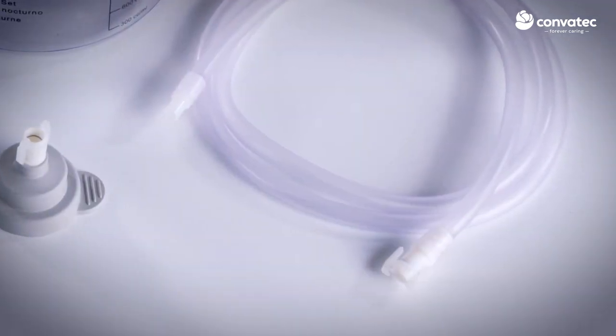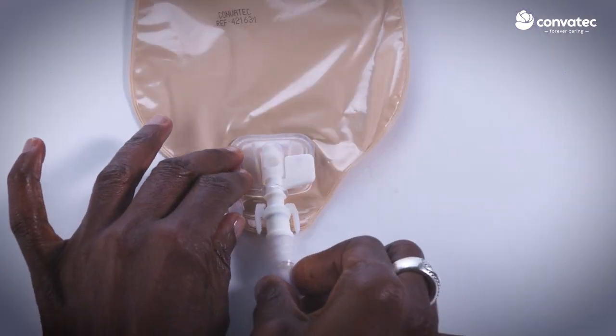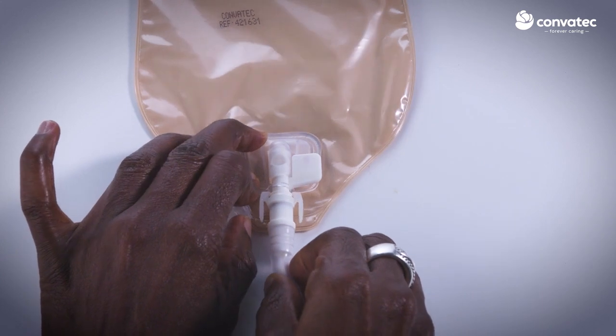Next, using the female end of the tube, which is the end with the clips, connect this end to the drain tap on the pouch. You may need to push firmly until you hear a click.